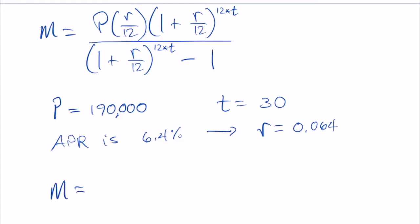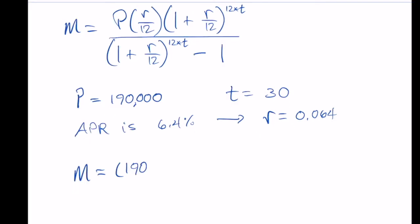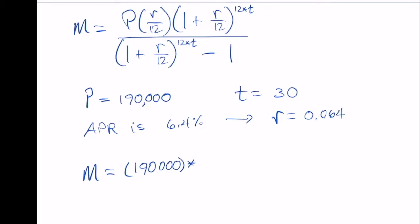I'm going to be very deliberate about some things like putting parentheses around the 190,000 and then deliberately saying times. And I have to do 0.064 divided by 12.